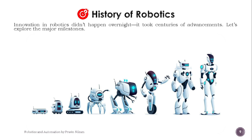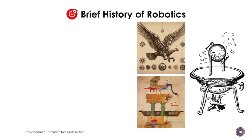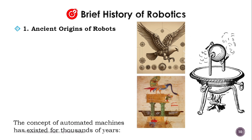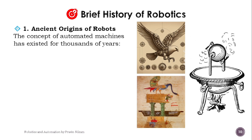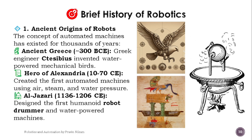Now, the history of robotics. Innovation in robotics didn't happen overnight — it took centuries of advancements. The concept of automated machines has existed for thousands of years. In ancient Greece, engineer Ctesibius invented water-powered mechanical birds, and Hero of Alexandria created the first automated machines using air, steam, and water pressure.